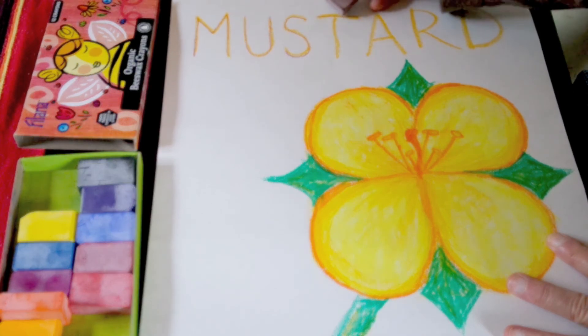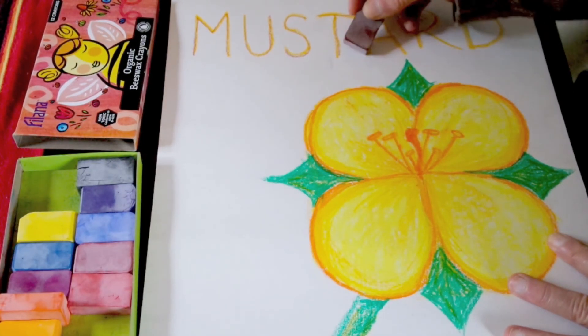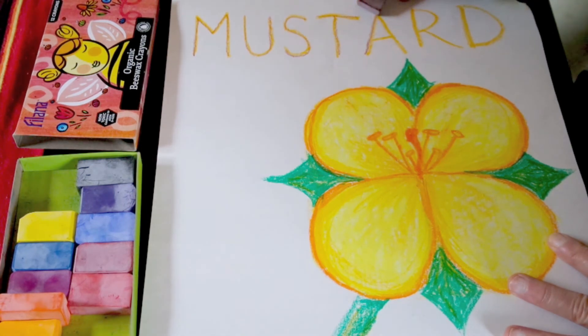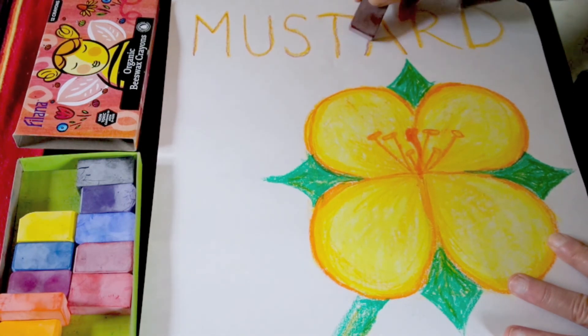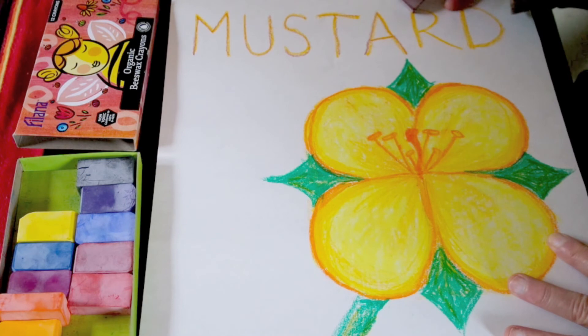When the plant is all the way mature and makes seeds, the seeds can be ground up to make mustard paste or to grow new mustard plants.